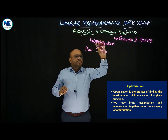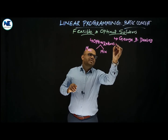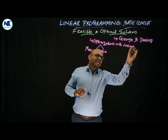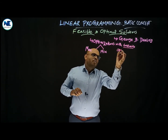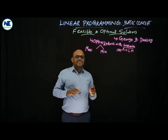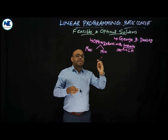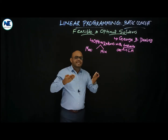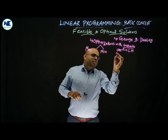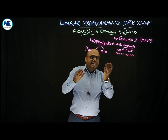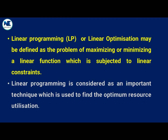We have already discussed optimization without constraints in module three, and optimization with constraints. If there is one constraint, we use the Lagrange multiplier technique — lambda. If we are facing two or more linear constraints, then we use the linear programming technique. This is the base of this topic.